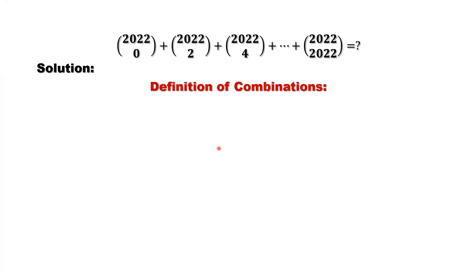Here is the definition of combinations: n choose k equals n factorial divided by k factorial times n minus k factorial.